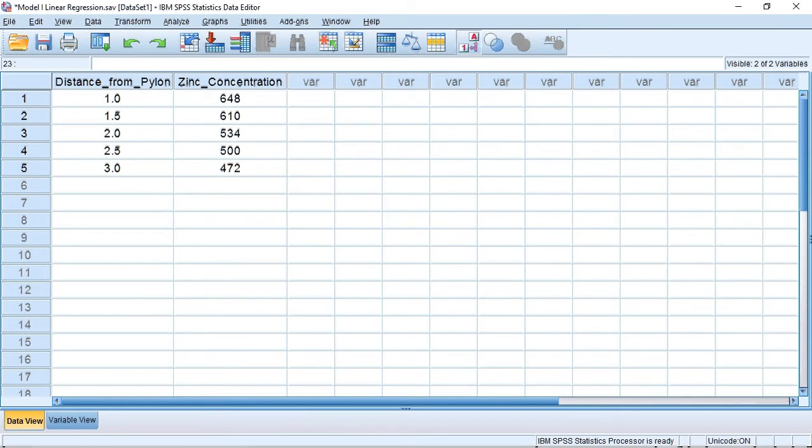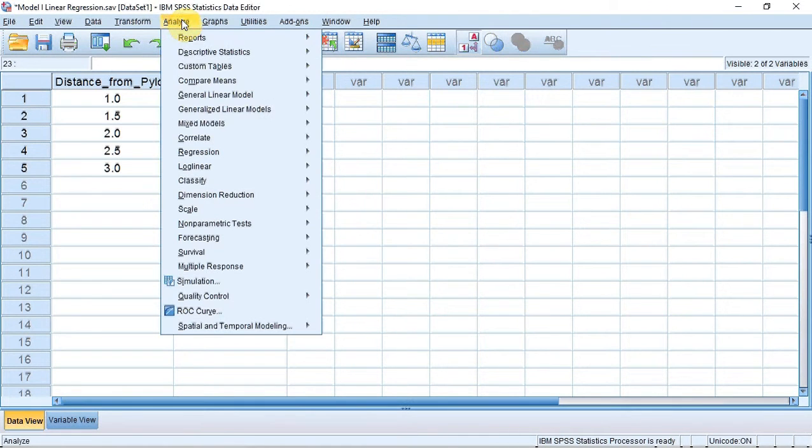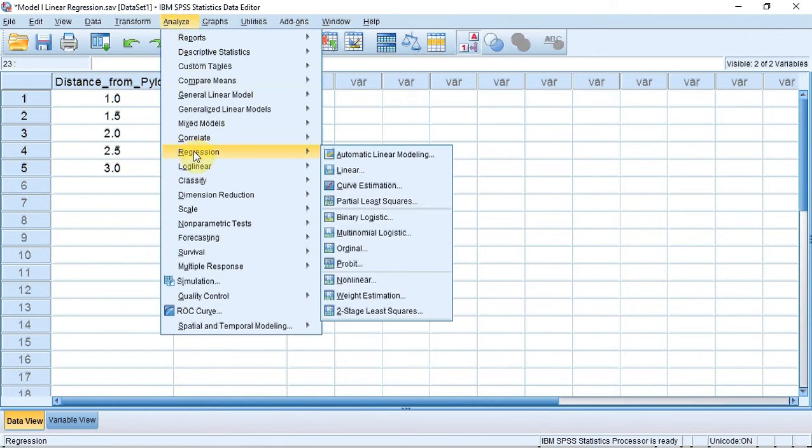This is the data from table 9.11, and I'm going to perform a simple linear regression on it. First, I track up to analyze and click, track down to regression from the list that appears, and then track to linear from the submenu list.